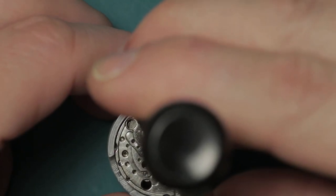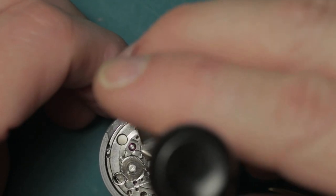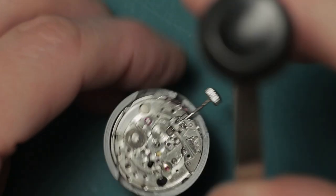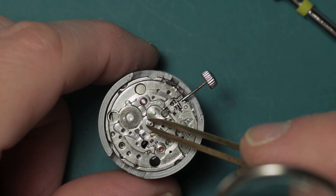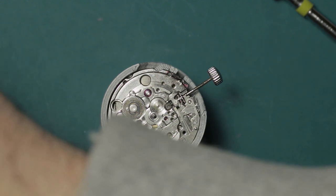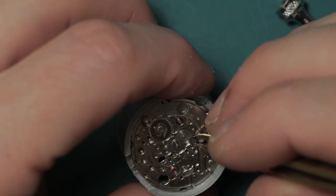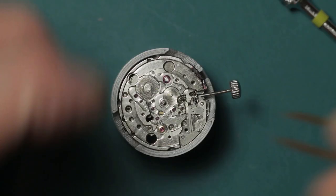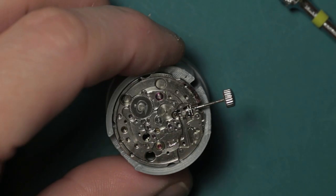So we remove the hour wheel, minute wheel, and the canon pinion. The intermediate time setting wheel fits between the clutch and minute wheel.